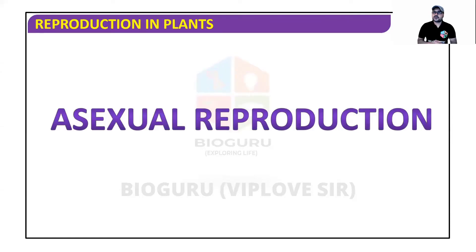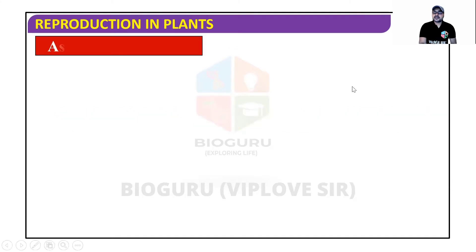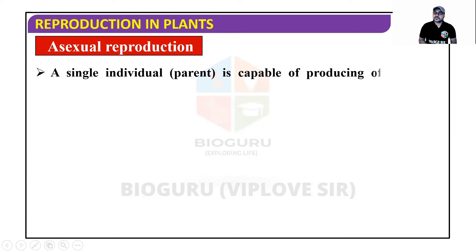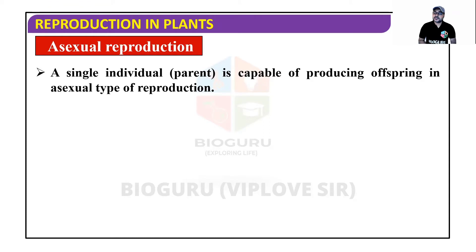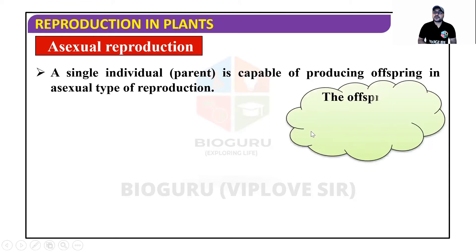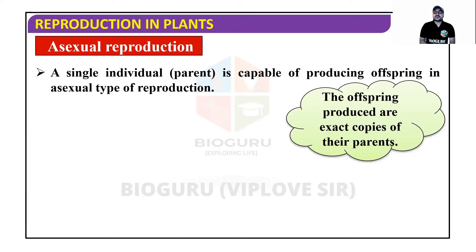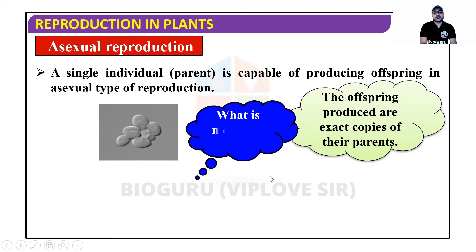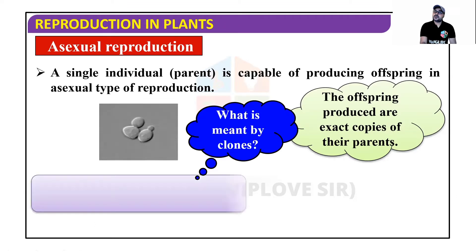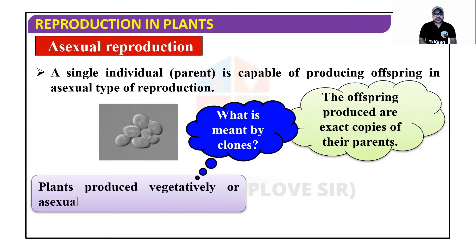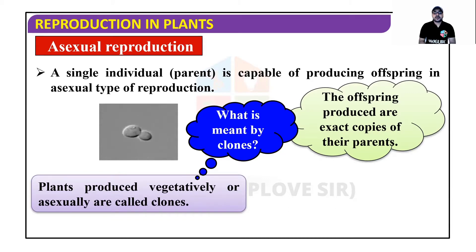Hello guys, welcome to BioGuru, your own channel. Today we will discuss asexual reproduction. In asexual reproduction, a single parent is involved — a single individual is capable of producing offspring. The offspring produced are exact copies of their parents, which is why they are also called clones. Any plant or organism produced vegetatively or asexually is called a clone.